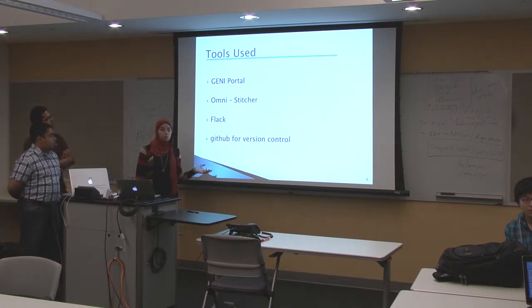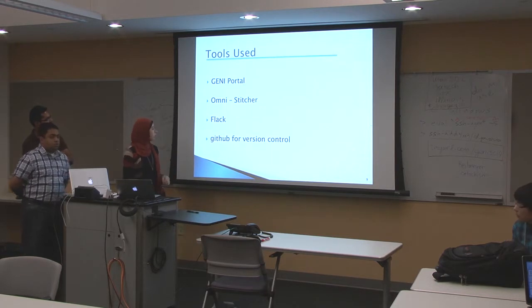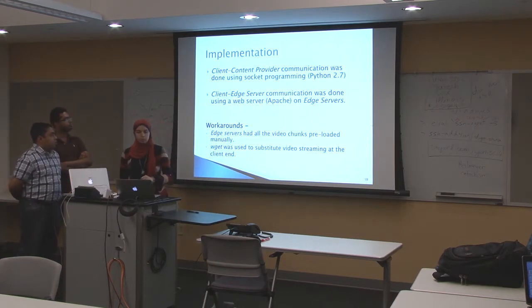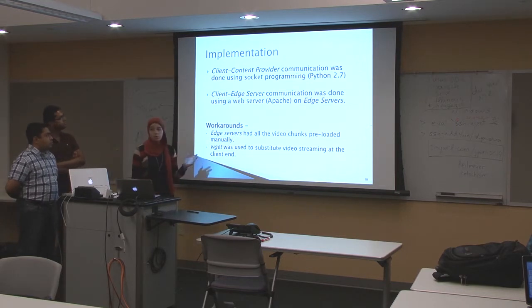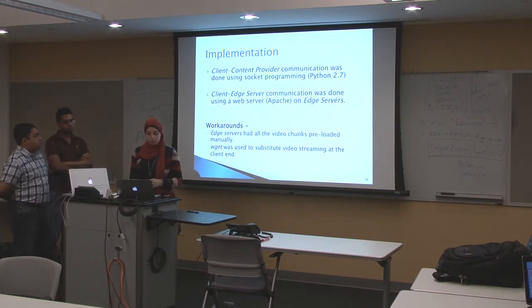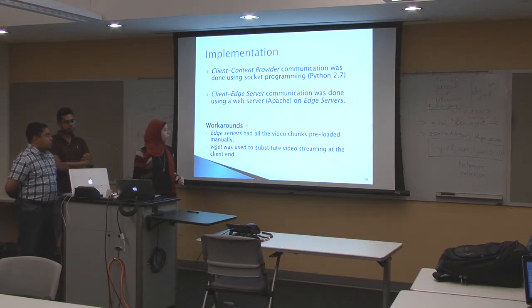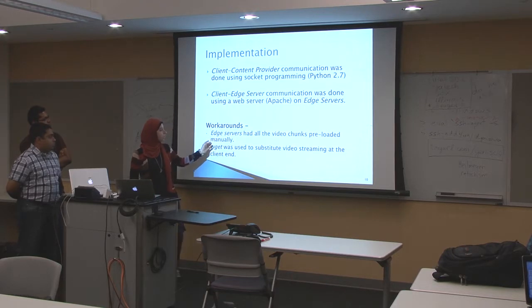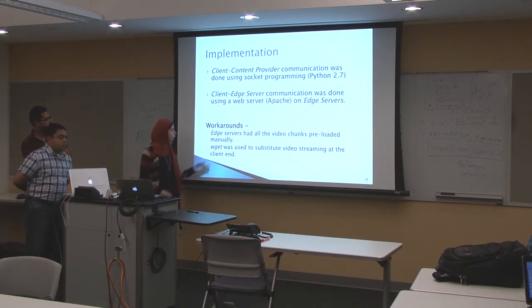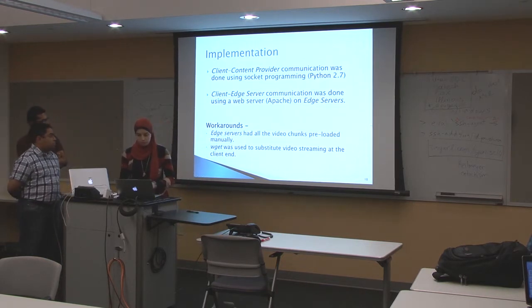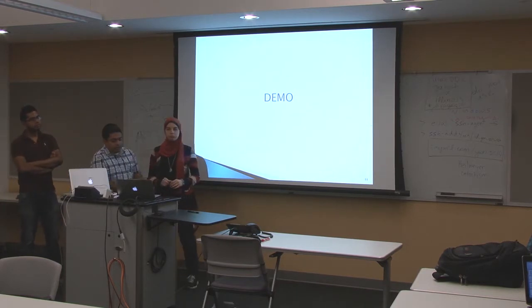The tools we used include the GENI portal, Stitcher from the Omni tool for stitching and initializing slices, Flack for editing the RSpec, and GitHub for version control during our experiments. For implementation, communication between the client and content provider uses socket programming, and communication between the client and edge server uses Apache as a web server. We assume edge servers have all video chunks preloaded offline, and we use Wget to substitute for video streaming — we download the chunks but do not play them.